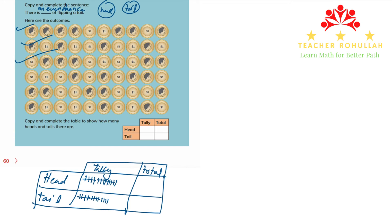For the fourth student, we have four heads and six tails. I record four tally marks for heads and six for tails. For the fifth student, we have five heads and five tails. I record five tally marks each. We are done with this one also.